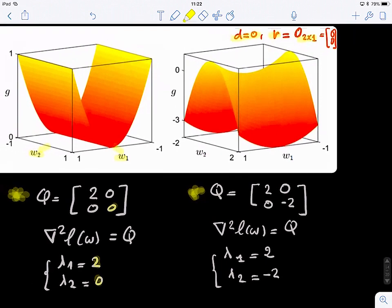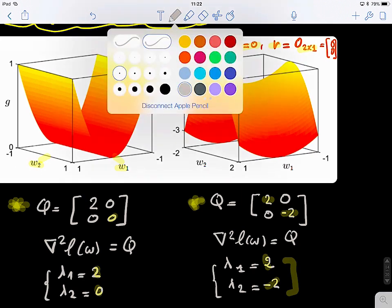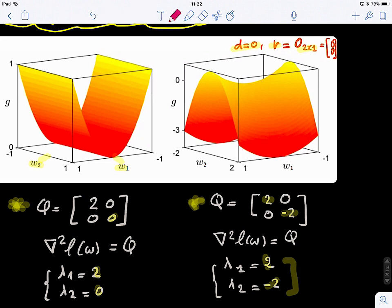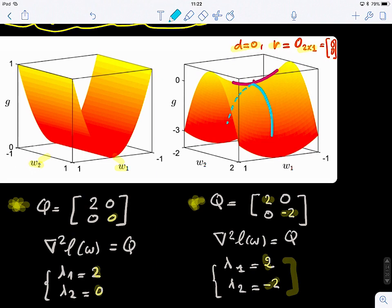What about this case? In this case, we have a different Q, 2 minus 2 on the diagonal, and for the eigenvalues we have one positive and one negative. You can see that it's not a minimum. What do we have here? Saddle point, because you have a positive curvature right there, but if you look at the other side, a negative one.